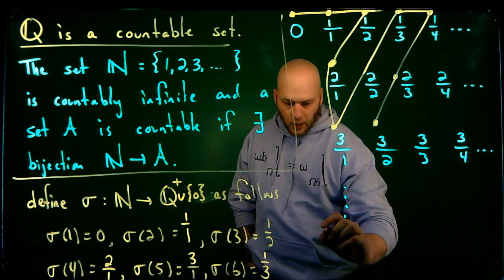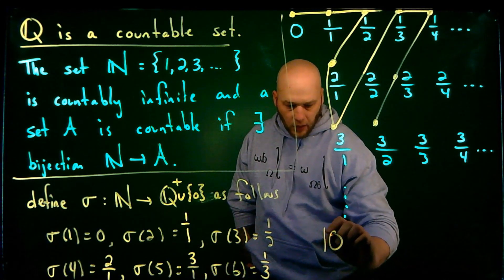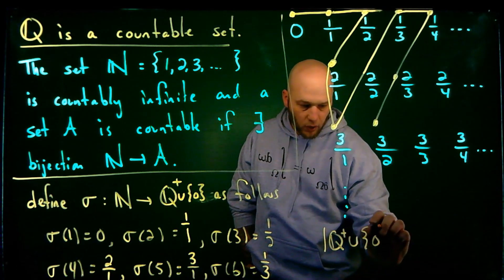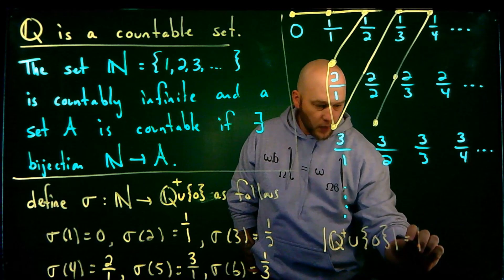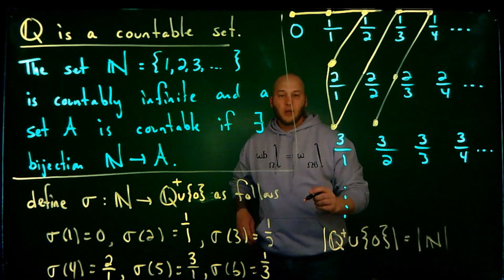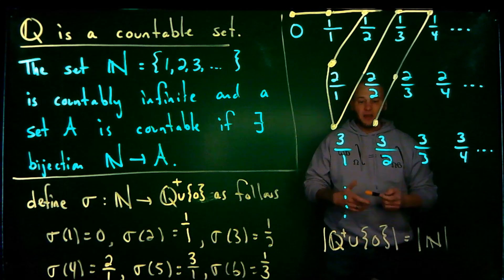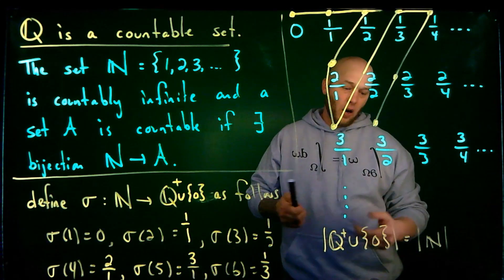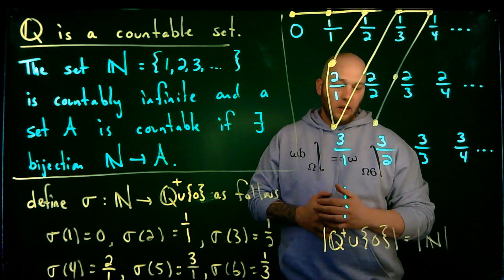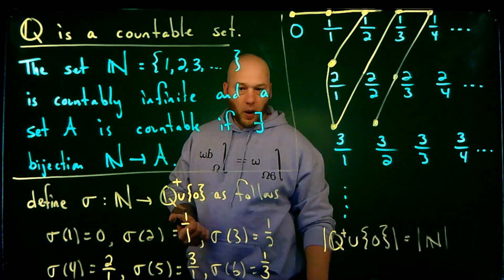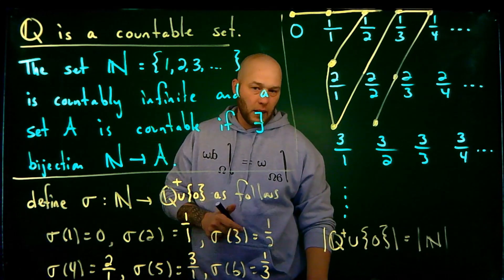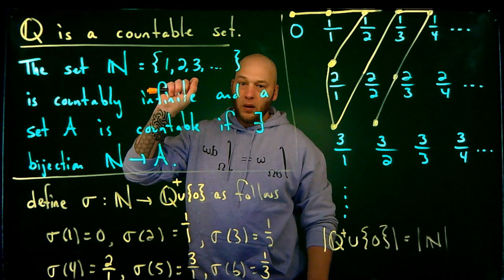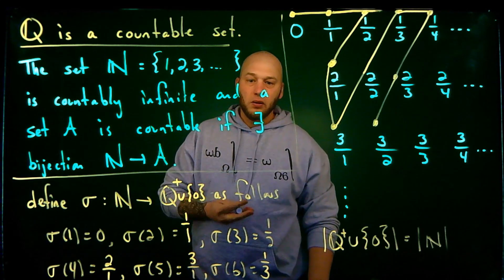Therefore, the cardinality of the positive rational numbers union zero is the same as the cardinality of N. So the non-negative rationals have the same size or cardinality as the natural numbers. I'm going to pause to clean this up and then show how to construct a bijection from the integers to all the rationals.